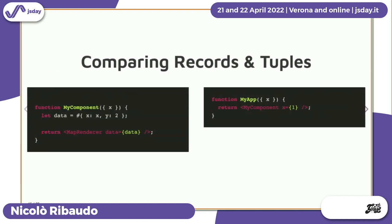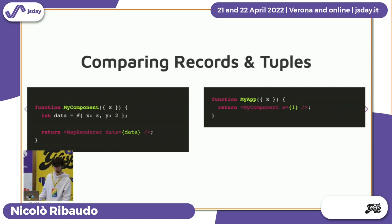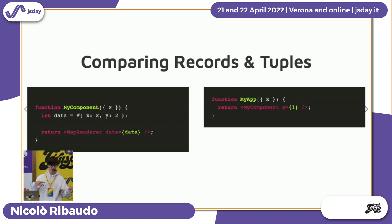Going back to our previous React example, this is identical to what I showed earlier except I'm using a record instead of an Immutable.js map. Records use the built-in JavaScript equality semantics, so React will now know that the record is actually always the same. By the way, in the next talk you will hear more about how React decides when to render or when not to render.